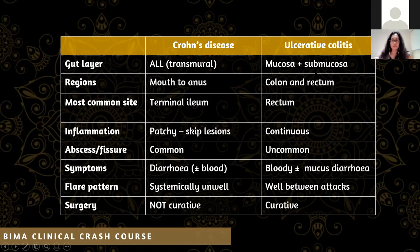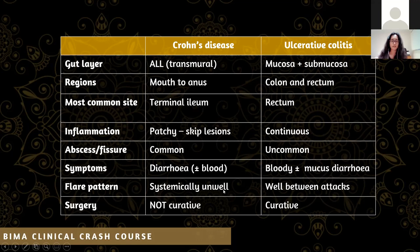Abscesses and fissures are common in Crohn's but not in ulcerative colitis. You can have blood in diarrhoea in Crohn's, but you definitely get it in UC, along with possible mucus. In between flares of UC you're well, but during a flare you get those systemic symptoms. Importantly, surgery is only curative for ulcerative colitis, not Crohn's.